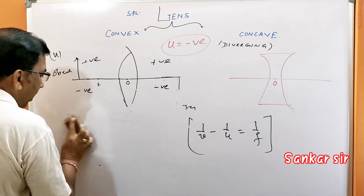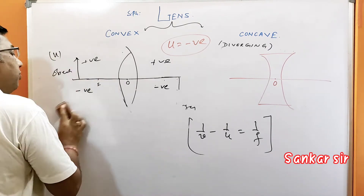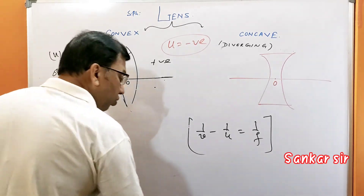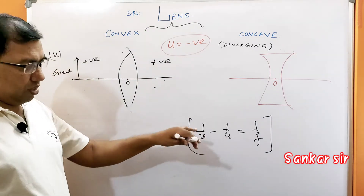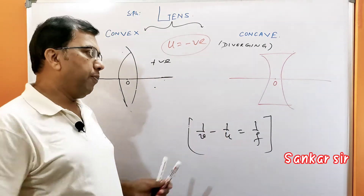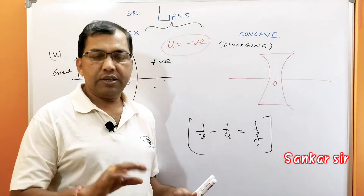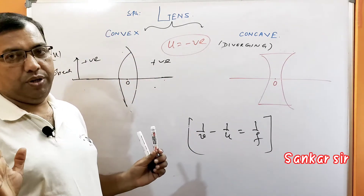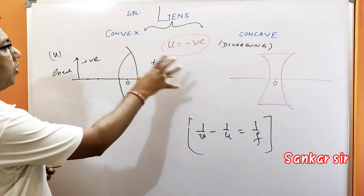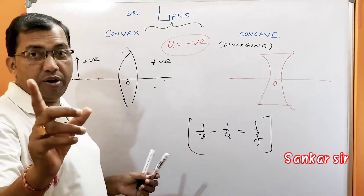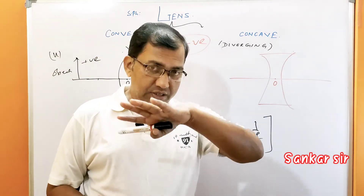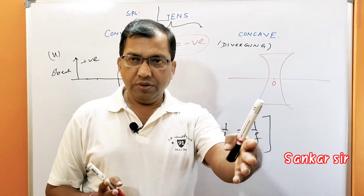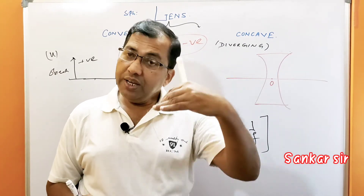All the solved numerical problems have been given in the description box — go through them and practice. If any problem is unclear, ask me. Also, one important thing: the power of the lens. Power means 1/f, measured in diopters when f is in meters. Power of the lens P equals 1/f.